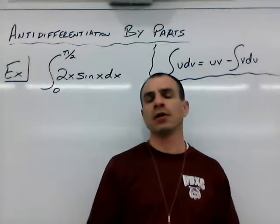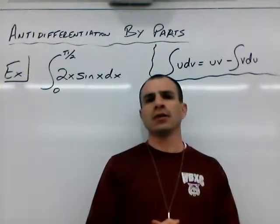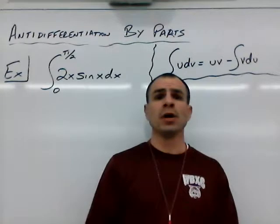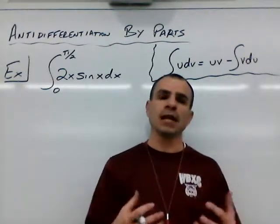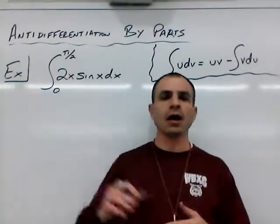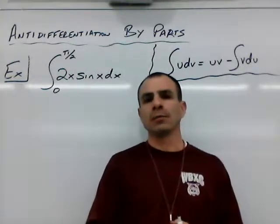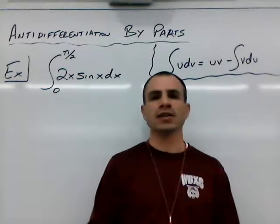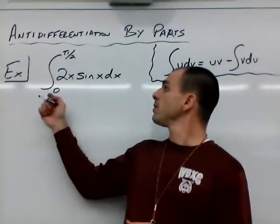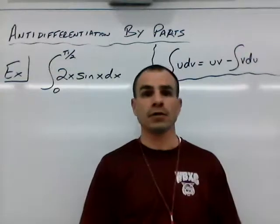We had a situation on the exam where you have to use integration by parts to solve a definite integral. And if that's the case, it's the same idea. We just got to keep in mind that we're plugging in our upper and lower limits of integration. So what we have here is 2x sine x dx, and we're trying to find an integral for that from 0 to pi over 2.